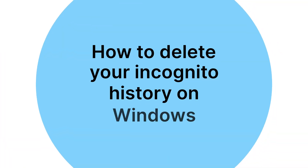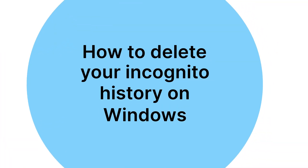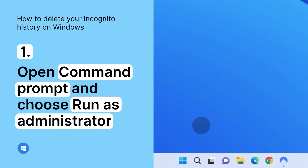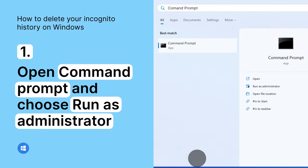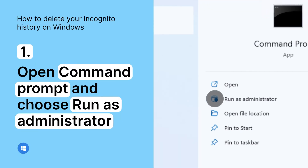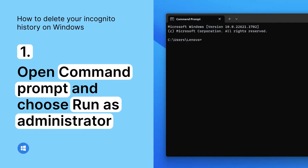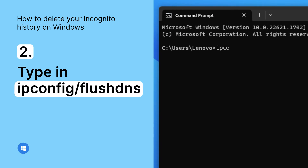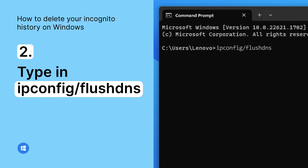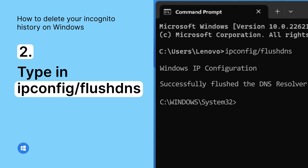Now here's how you delete it. Open Command Prompt and choose Run as administrator again. Type in ipconfig /flushdns in the Command Prompt window and hit Enter. And that's it!